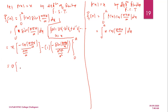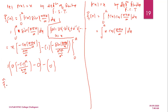At the upper limit x = a, the a cancels in the first term giving cos(nπ) = (−1)^n, multiplied by −a/(nπ). For the second term, sin(nπ) = 0. At the lower limit x = 0, all terms vanish. Therefore the finite Fourier sine transform of f(x) = x is f̃_s(n) = −(a/nπ)(−1)^n, which equals (a/nπ)(−1)^(n+1).